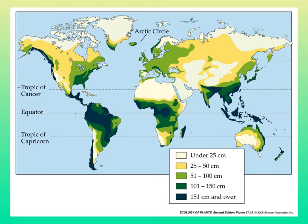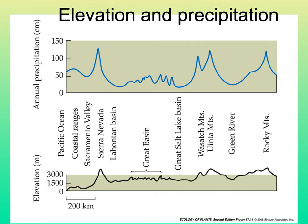Rainfall is not distributed equally over the surface of the earth. The driest places are shown in white and yellow, and moister areas in greens. The wettest places are dark black, mostly in tropical regions. As you go to higher elevations — shown in a cross-section from the Pacific coast to the Rocky Mountains — at every higher elevation, such as the Sierra Nevada, the Wasatch Mountains, and the Rocky Mountains, precipitation is much higher.